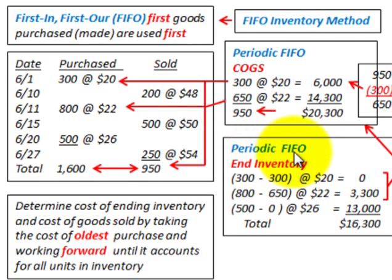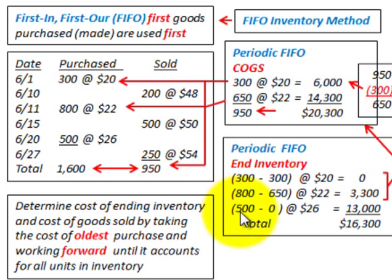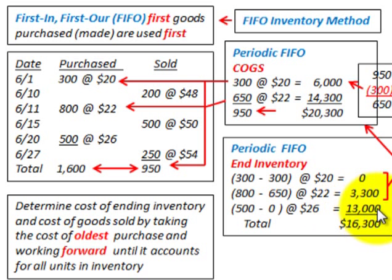For ending inventory under periodic FIFO, we used all 300 units at $20, so nothing remains from that group. From the 800-unit batch, we used 650, leaving 150 units at $22 each, which equals $3,300. The remaining 500 units that were purchased were not used at all, so they sit in ending inventory at $26 each, totaling $13,000. Total ending inventory is $16,300.